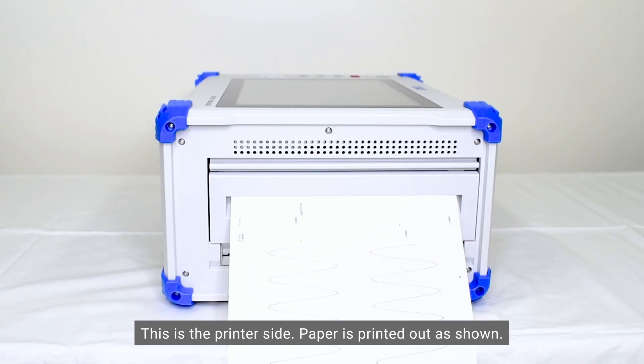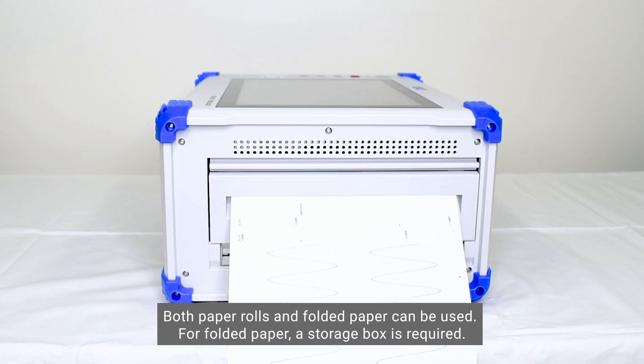This is the printer side. Paper is printed out as shown. As usual, RA2300 series recording paper is used. Both paper rolls and folded paper can be used. For folded paper, a storage box is required.